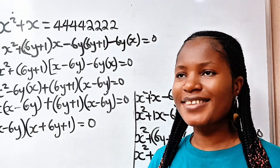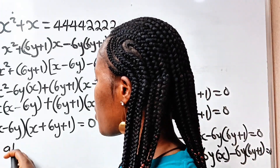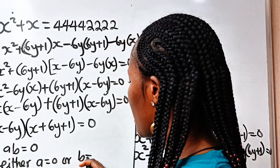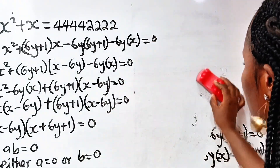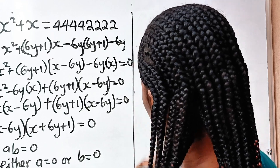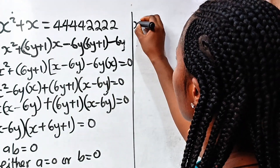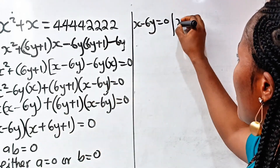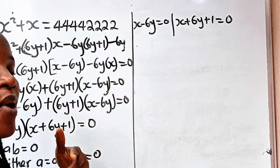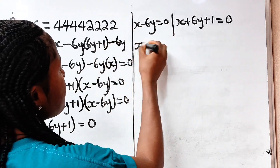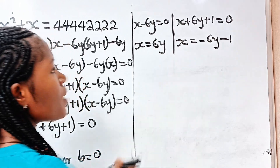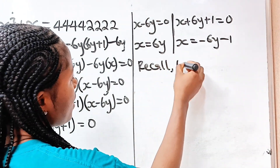Remember that when a multiplied by b equals zero, either a equals zero or b equals zero. So either x minus 6y equals zero, giving x equals 6y, or x plus 6y plus 1 equals zero, giving x equals minus 6y minus 1.